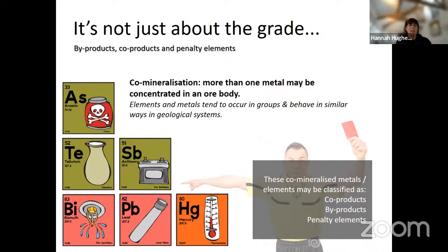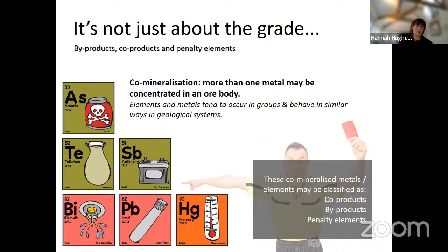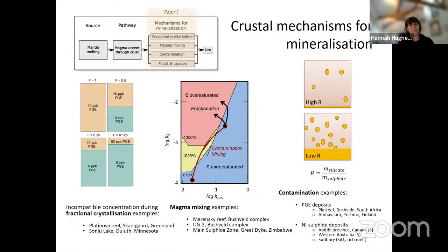When thinking about multi-commodity ore bodies — of which PGE mineralization, like rare earth mineralization, is a classic example — it's not just about the grade, it's also about what it's co-mineralized with, whether there are by-products, and whether there are penalty elements. For example, arsenic and mercury associated with PGE mineralization are penalty elements — when they go through the smelter, they need to be scrubbed and can't be released to the environment, resulting in penalty charges to the mining company.